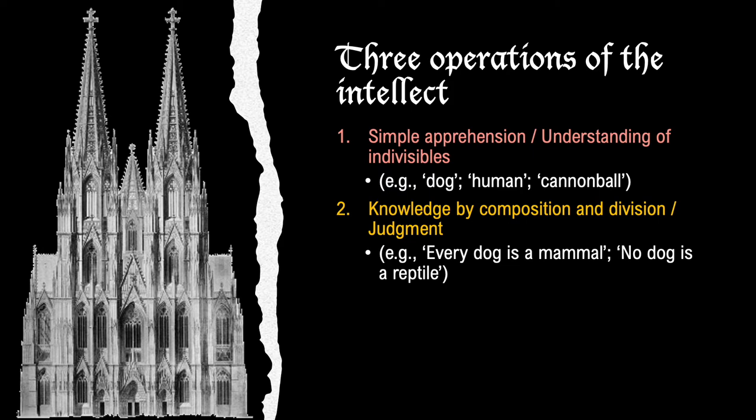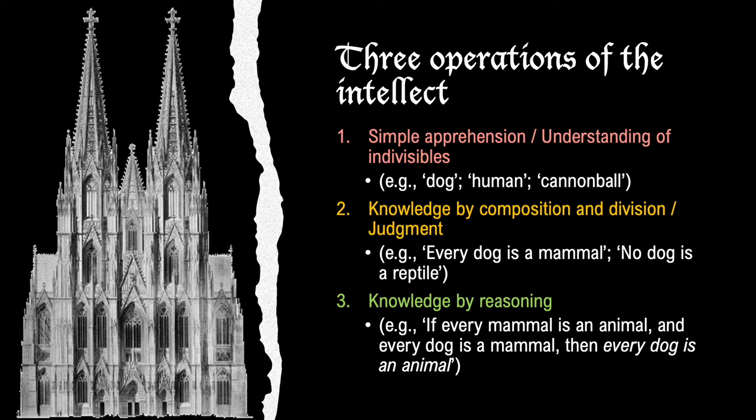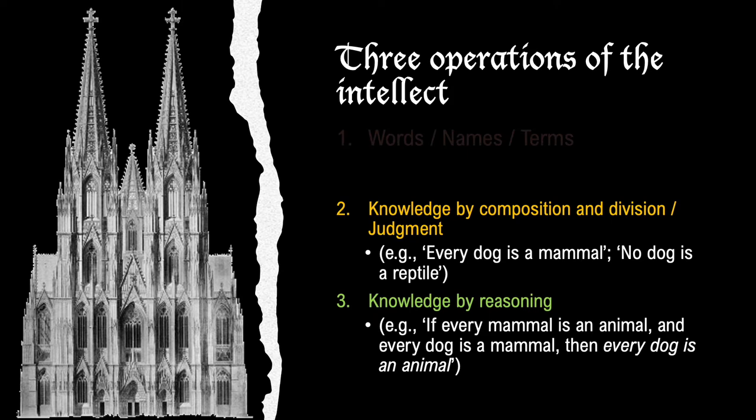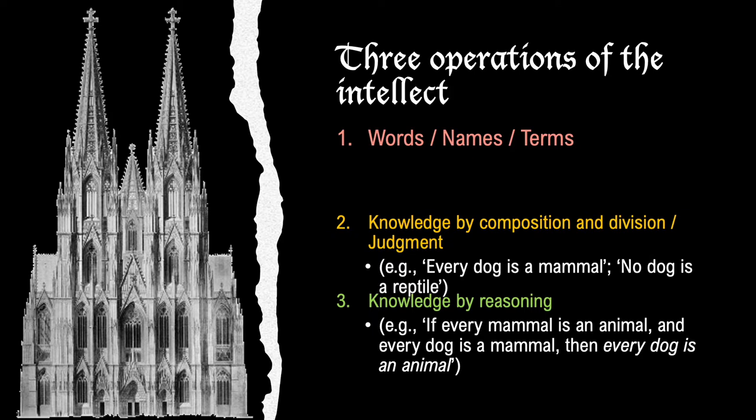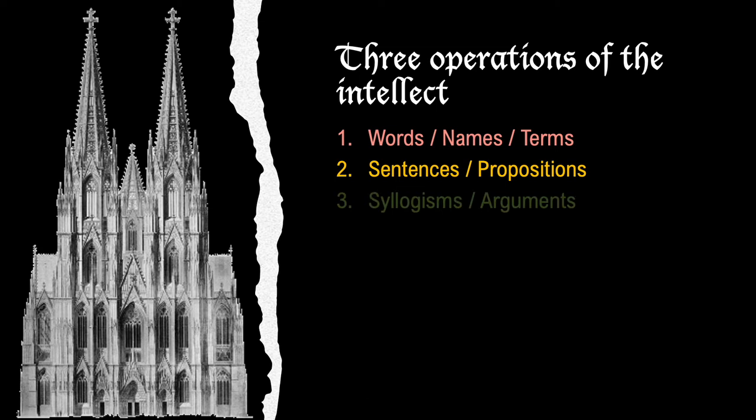The third operation of the intellect is called knowledge by reasoning. In this operation, we reason from something known, such as 'every mammal is an animal' and 'every dog is a mammal,' to something unknown, like 'every dog is an animal.' The first operation corresponds to words, names, or terms. The second operation corresponds to sentences or propositions. The third operation corresponds to syllogisms or arguments.